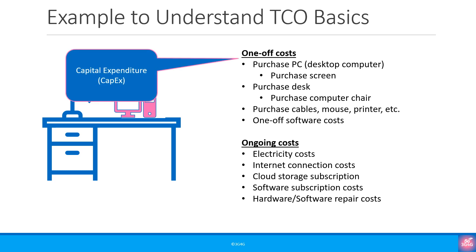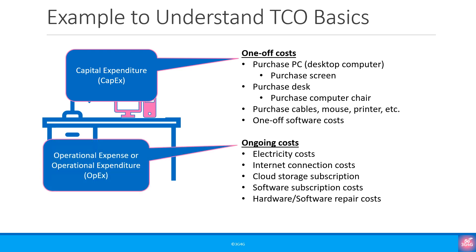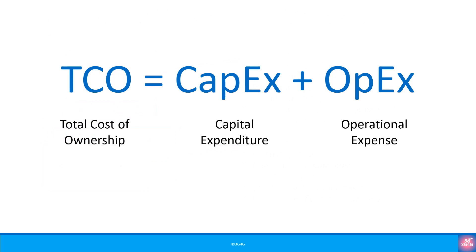These one-off costs are referred to as capital expenditure or CapEx. The ongoing costs are referred to as operational expenditure or operational expense or OpEx. TCO is the sum of capital expenditure CapEx and operational expense or OpEx.